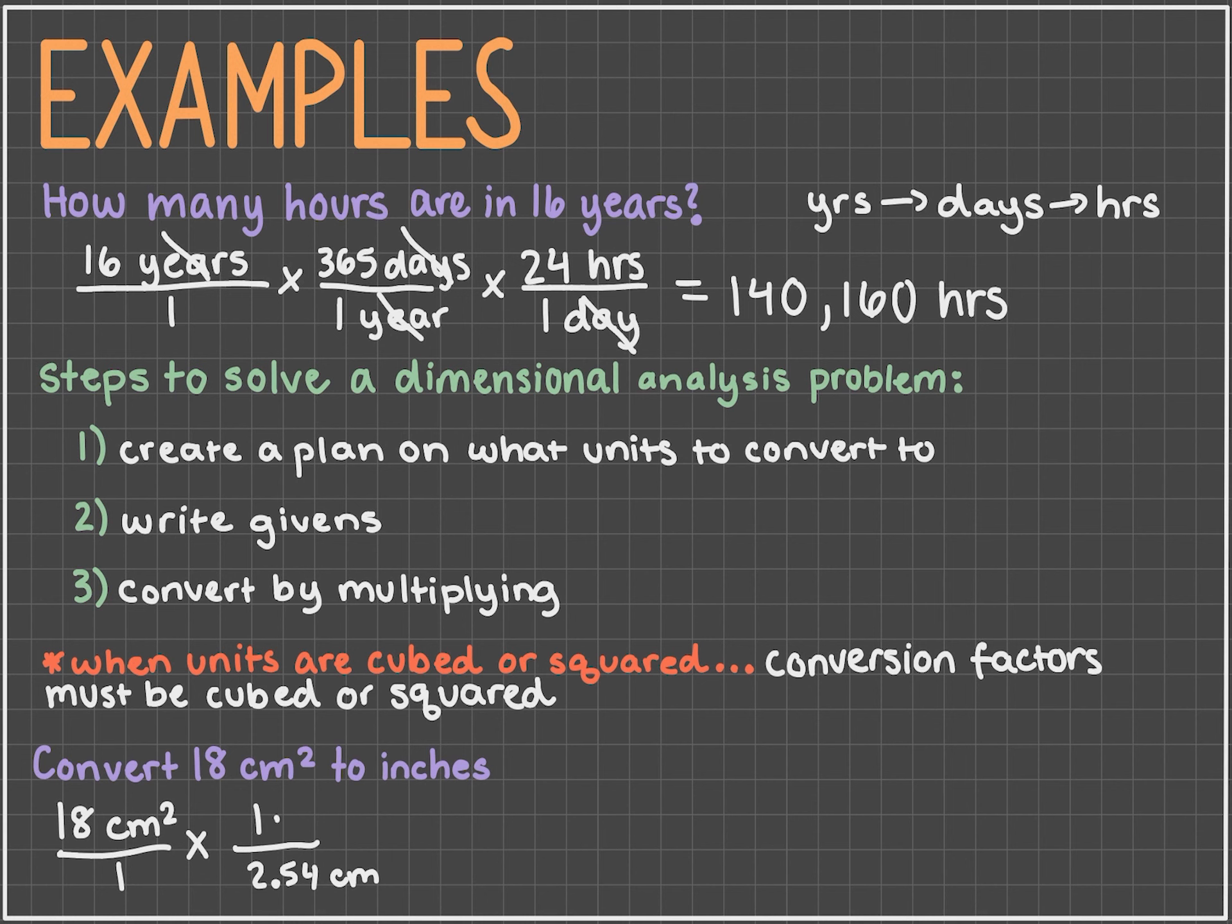However, we need to raise the 1 over 2.54 to the second power, because the unit we start with is centimeters squared. We can distribute the second power to the numerator and denominator, but make sure to also distribute it to the units. So now we multiply 18 centimeters squared by 1 inches squared over 6.45 centimeters squared. And that gives us 2.79 inches squared as our final answer.